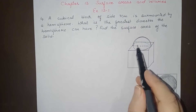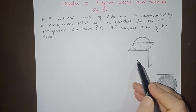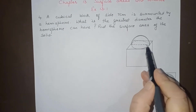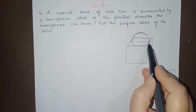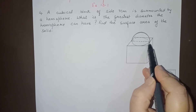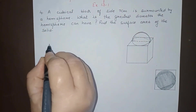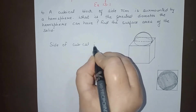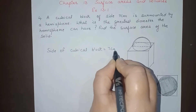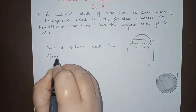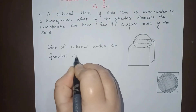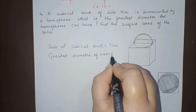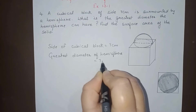You can see from this figure, this is a complete solid — a cubical block with a hemisphere placed over it. Now you have to find the greatest diameter that the hemisphere can have. It will be the edge of the cube. So, the side of the cubical block equals 7 cm, and the greatest diameter of the hemisphere is equal to 7 cm.